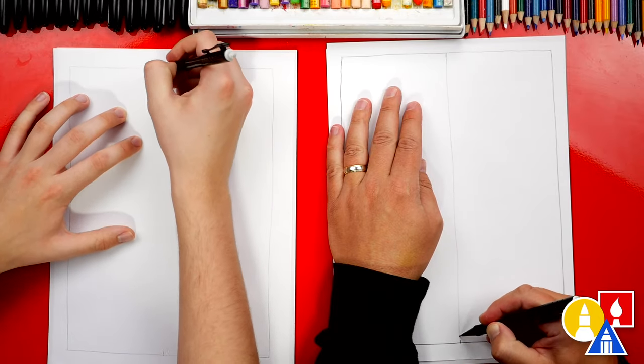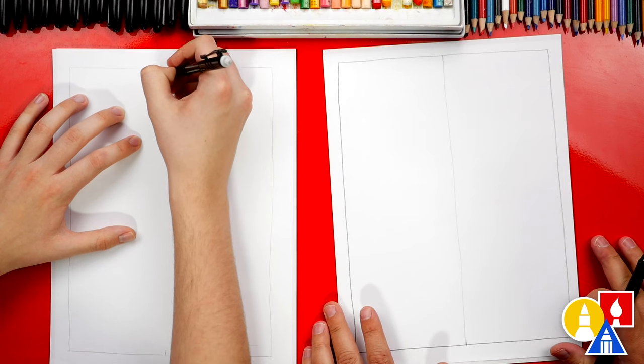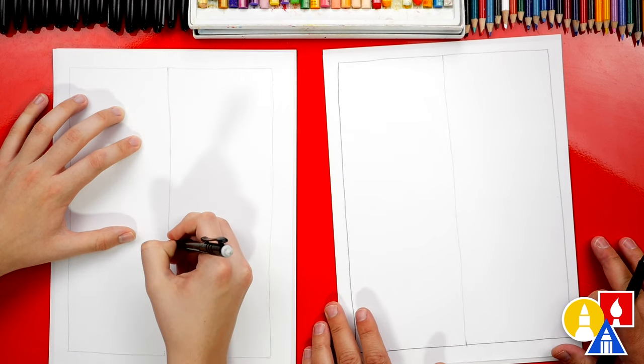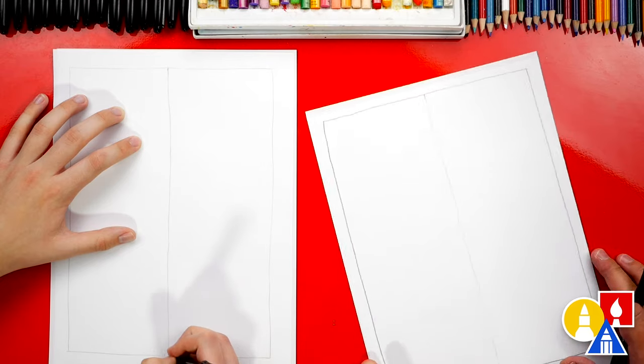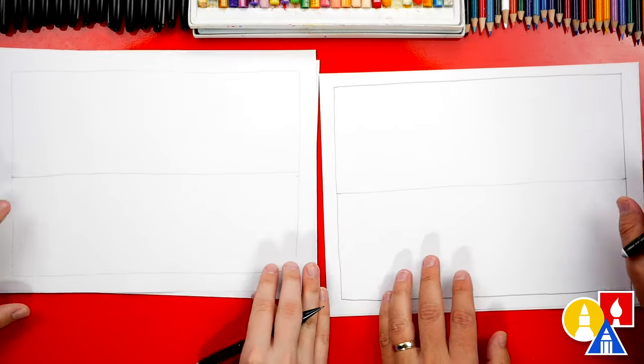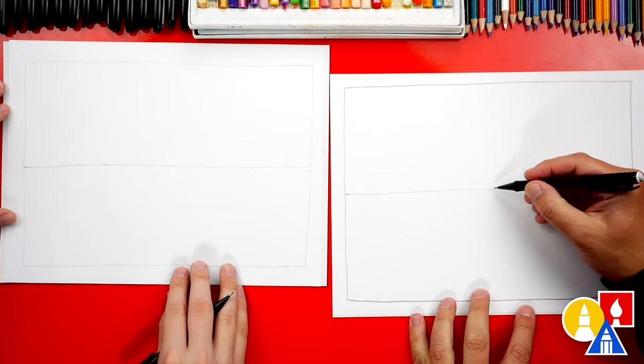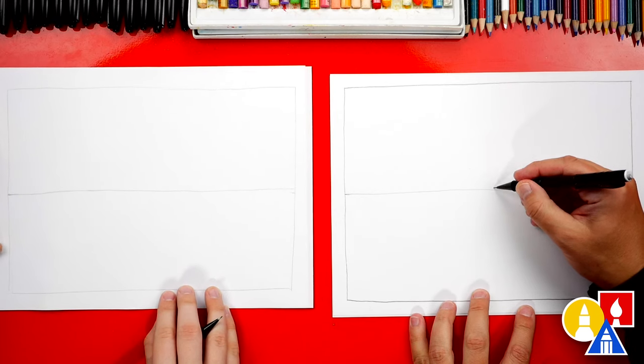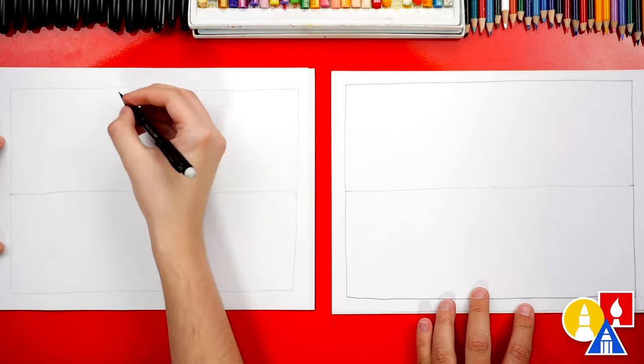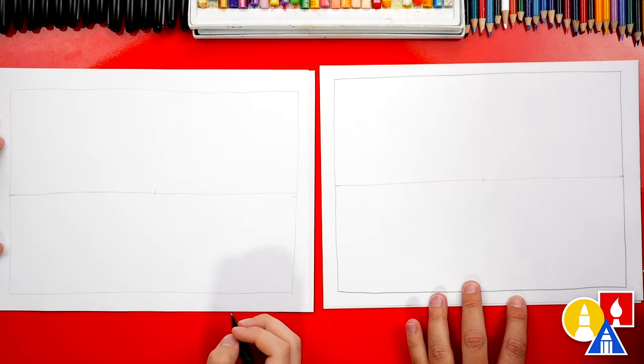This line I'm gonna press lightly because we're gonna erase it before we color. There you go. And we can turn our paper horizontal again. We're gonna measure and split our flag in half and just put a guide point right about there. Totally guessing, just use your eyes. I think it's fun to measure with your eyes. Yeah, it is.